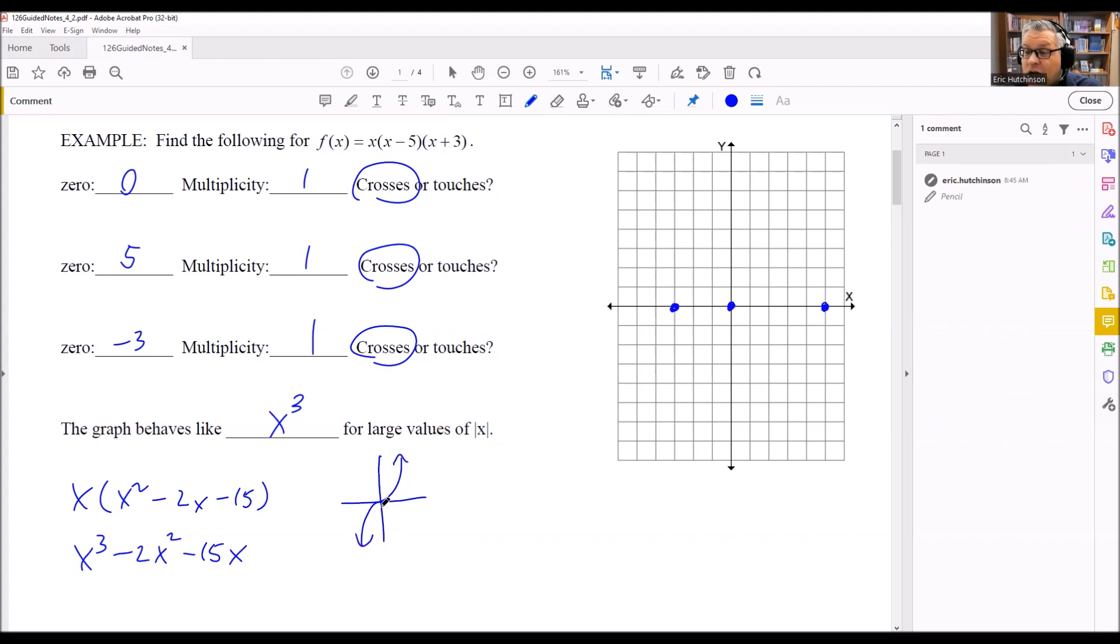So all I really care about is what the graph does on each of the ends, because it's talking about what happens when x is very large. So we're looking at this end and that end. This is going to tell me that the graph is actually going to start by coming up from down below.